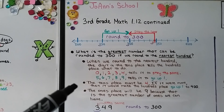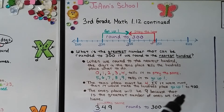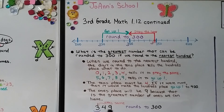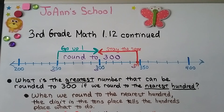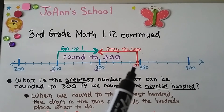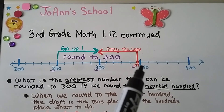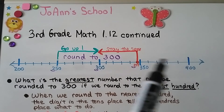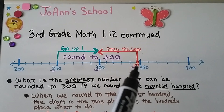If the tens digit were more than 4, it would make the hundreds place go up 1 to 400. The ones place will be a 9 because that's the greatest number of ones we can have. If there's a 4 in the tens place, it tells the 3 to stay the same, and then the 4 and the 9 turn into zeros, and it would round to 300. So the greatest number that can be rounded to 300 would be 349. If we added one more and were at 350, that 5 tells the 3 to go up, so that would round to 400.